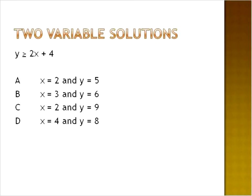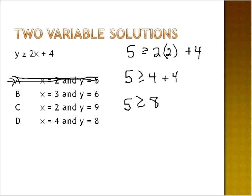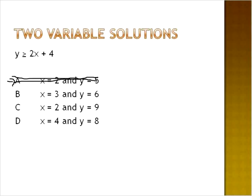Let's look at one more question. This one has two variables, X and Y, so we'll be given an X value and a Y value to put into the equation. Y is greater than or equal to two X plus four. In option A: five is greater than or equal to two times two plus four, which gives five is greater than or equal to eight. That's not true — five is less than eight, so that is not a correct solution.